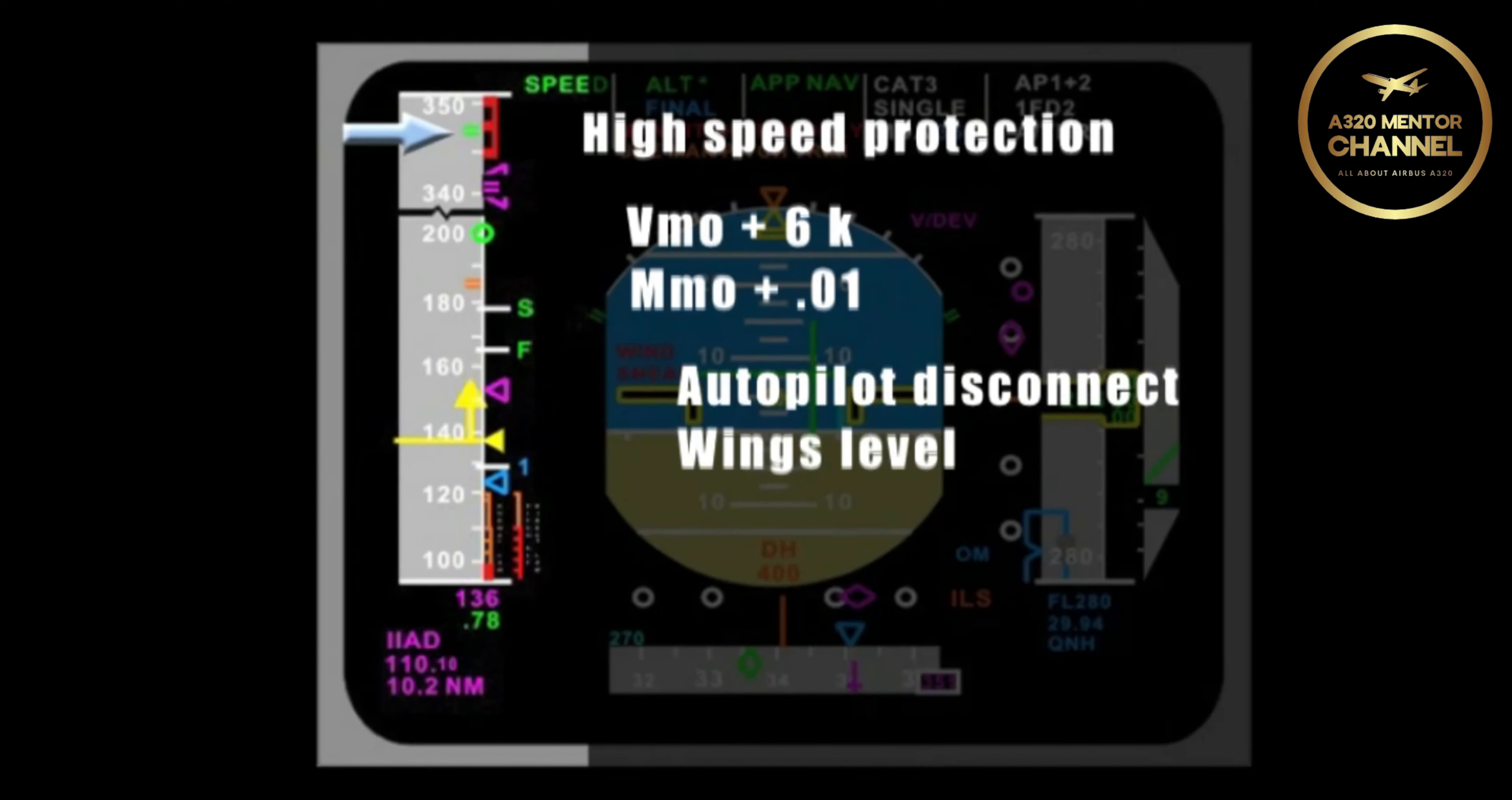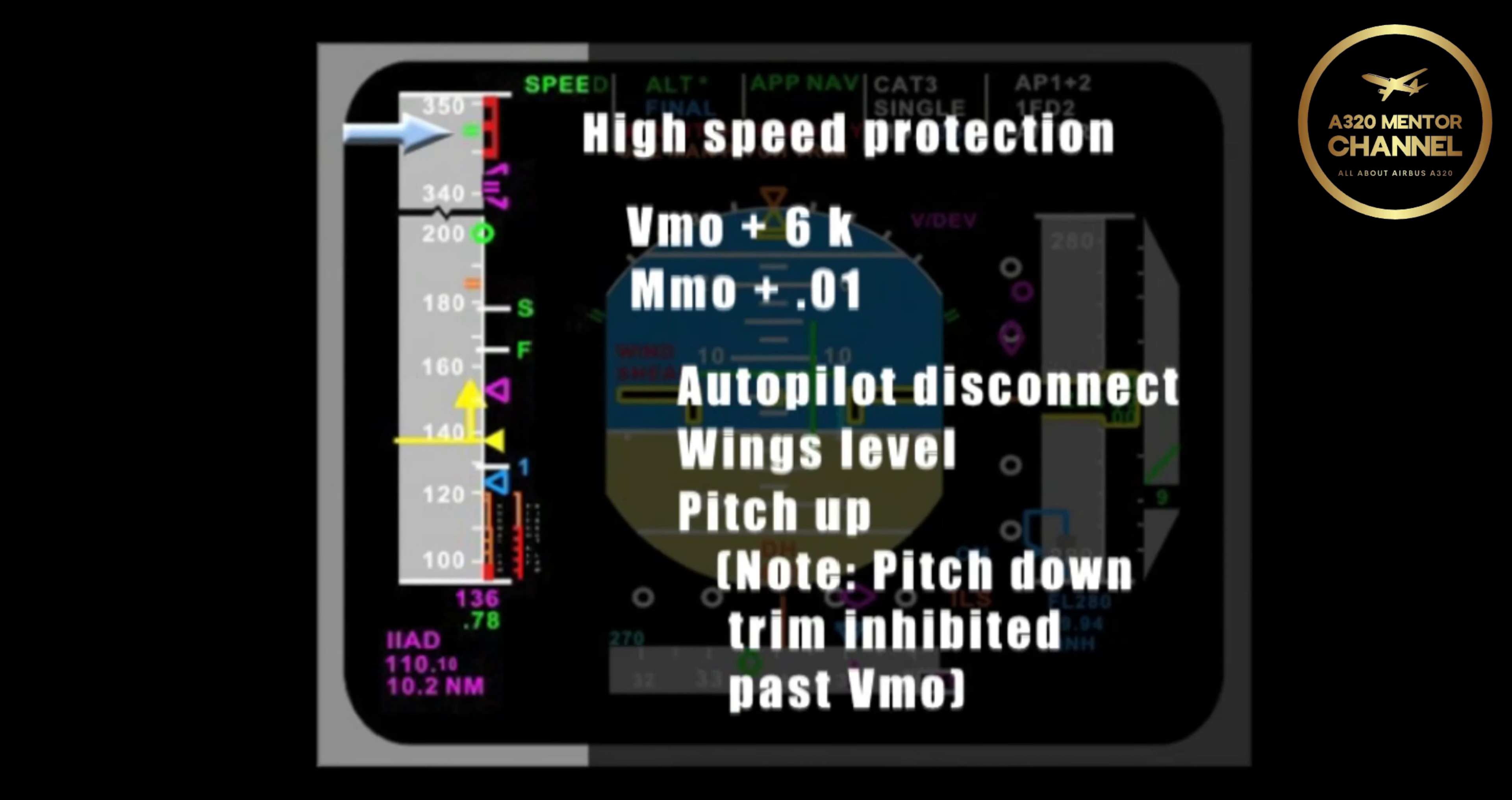That speed is 6 knots above VMO or 0.01 above MMO. We will get an autopilot disconnect. The airplane will roll wings level if the side stick is released or bank is limited to 45 degrees if roll is requested, and pitch up in an effort to slow below that speed. This pitch up can be overridden by full forward side stick.